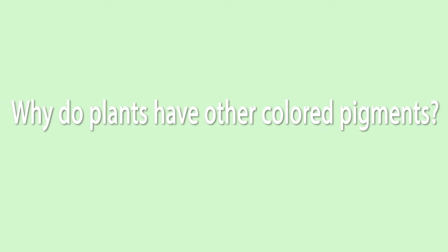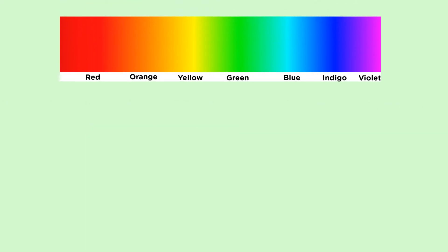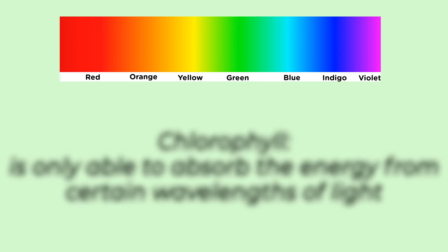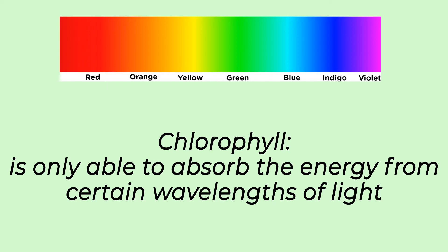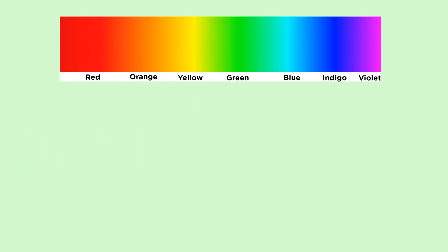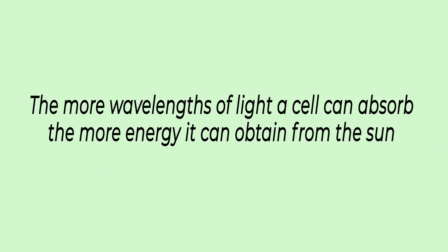Back to our original pigment question — why do plants have these other colored pigments? Xanthophylls, which are yellows, and carotenoids, which are orange, are some examples. White light that comes from the sun has all the colors of the rainbow — Roy G. Biv. Chlorophyll is only able to absorb the energy from certain colors or wavelengths of light. The other pigments each have particular wavelengths of light they can absorb. The more wavelengths of light a cell can absorb, the more energy it can obtain from the sun.